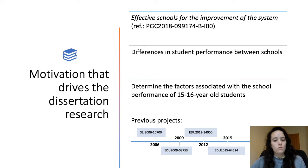To do so, we start by determining the factors associated with the school performance of 15 and 16 year old students based on PISA 2018 data. This thesis continues the line of research initiated in previous projects developed by the Interaction and E-Learning Research Group of the University of Salamanca.